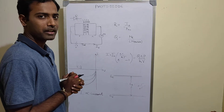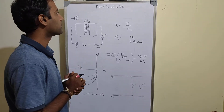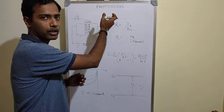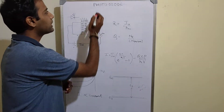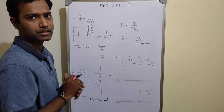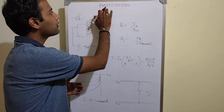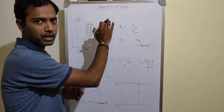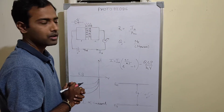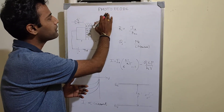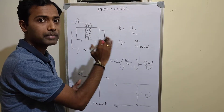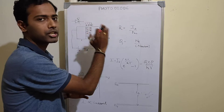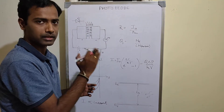Welcome back to my YouTube channel. In this video I will be discussing the photodiode. What is a photodiode? Photo means light, and the diode is the normal diode which we are using. So what is the difference between a photodiode and a normal PN junction diode?